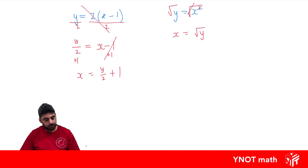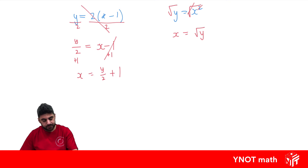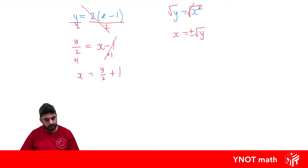But whenever we have a pronumeral that's squared and we square root it, we have to introduce a plus or minus on the other side. So we actually get x equals plus or minus root y.